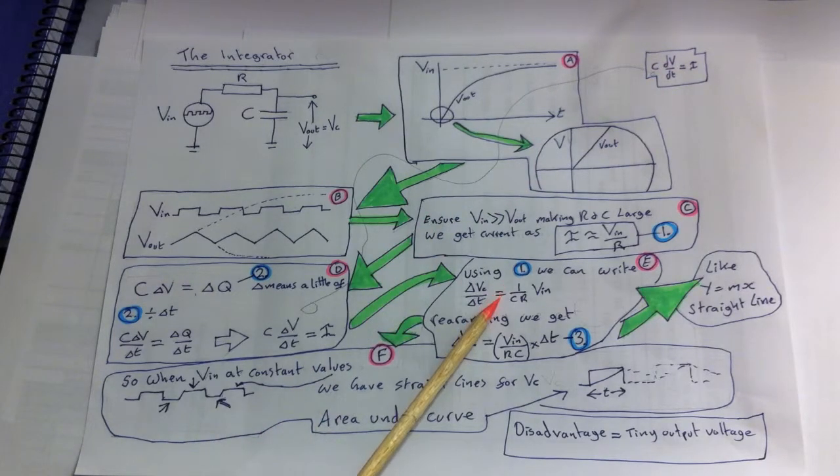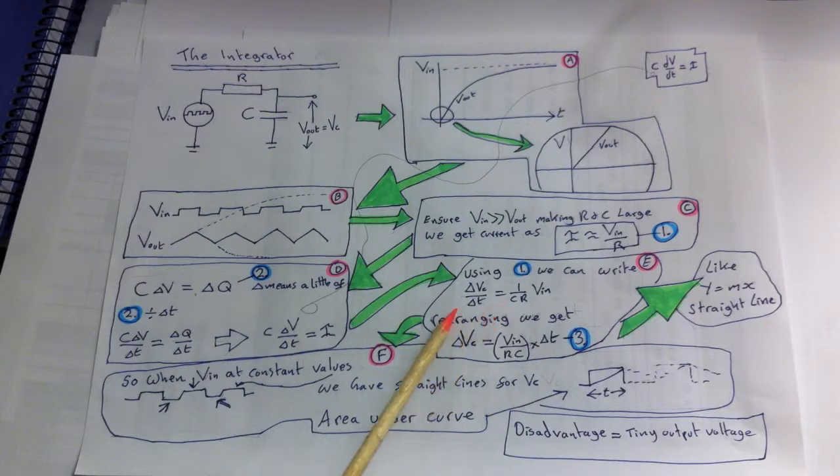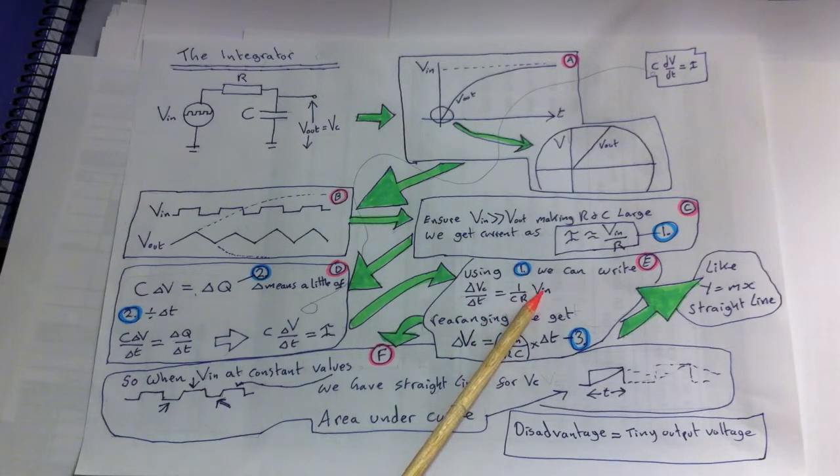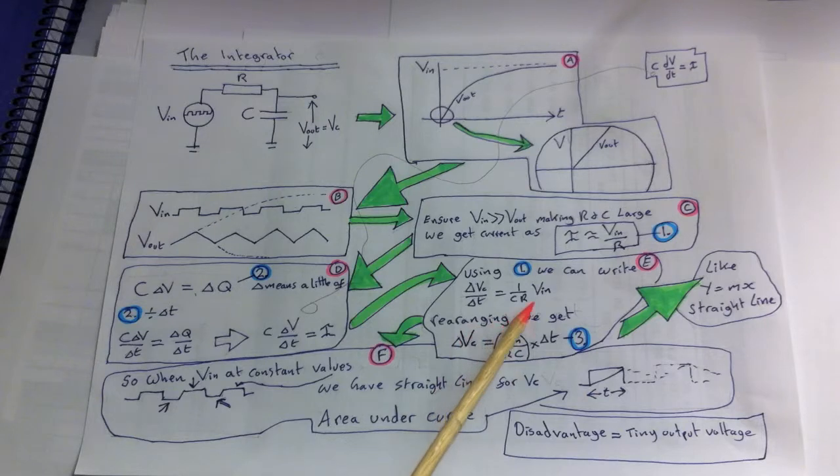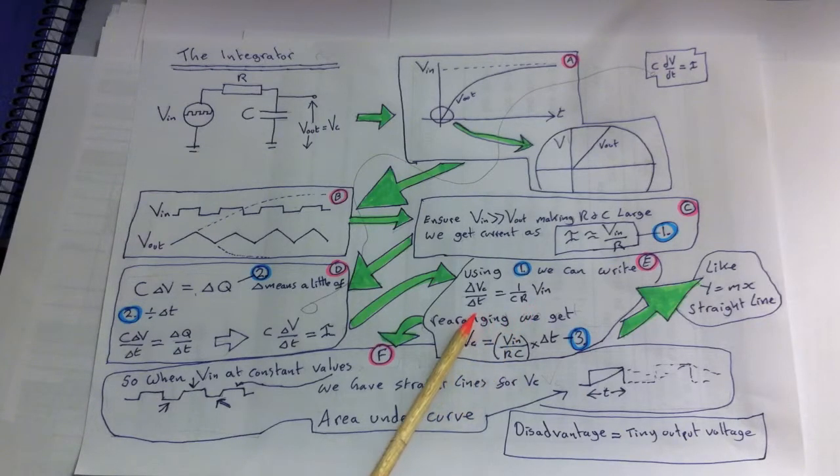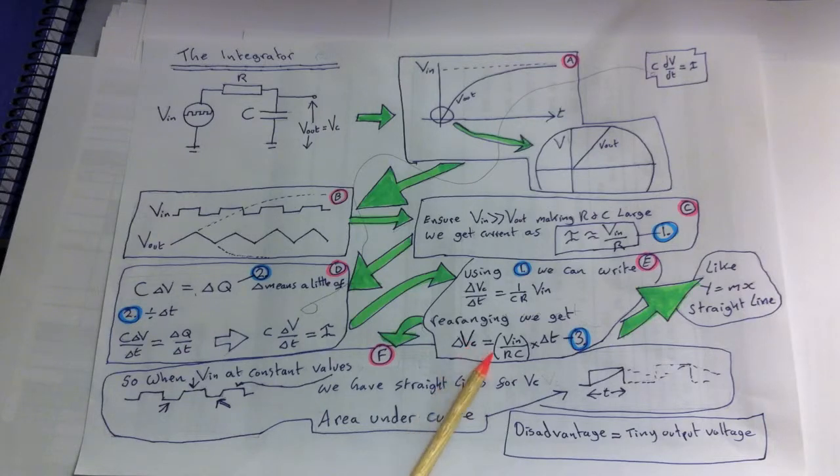We can substitute equation 1 into this so we can write dV/dt equals 1 over CR times Vin. In words this is saying that the rate Vout changes is proportional to Vin. And if we then multiply through by ΔT we get ΔVc which is the output voltage equals Vin over RC times ΔT.